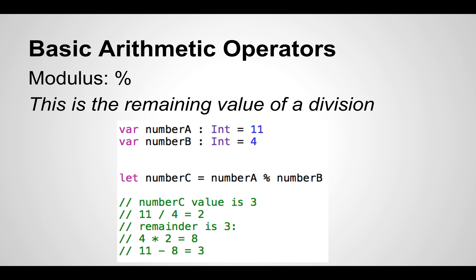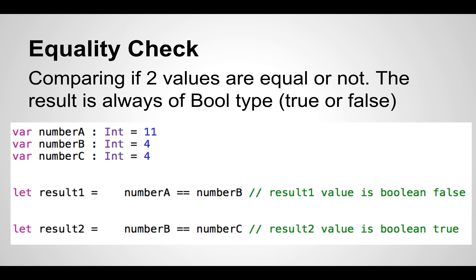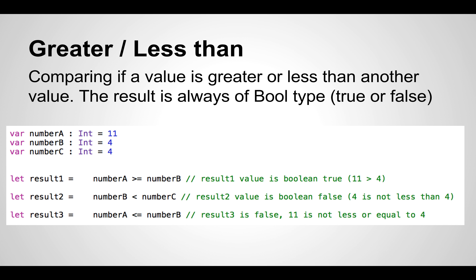The equality check operator compares if two values are equal, and the result is always a boolean — true or false. With numberA as 11, numberB as 4, and numberC as 4: result1 equals numberA == numberB, which is false because 11 is not equal to 4. Result2 equals numberB == numberC, which is true because both b and c are 4.